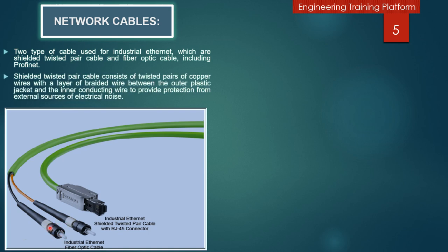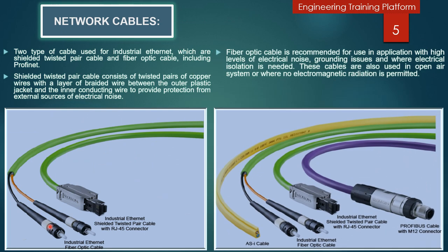Shielded twisted pair cable consists of twisted pairs of copper wires with a layer of braided wires between the outer plastic jacket and the inner conducting cores, to provide protection from external sources of electrical noise. Fiber optic cable is recommended for applications with high levels of electrical noise, where grounding problems exist, or where electrical isolation is needed.